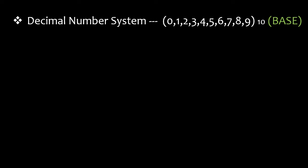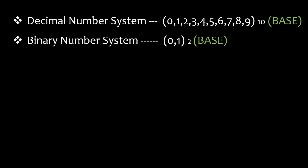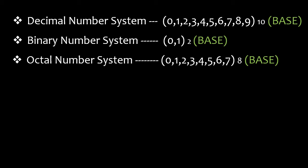The decimal number system starts from 0 and ends at 9, with a total of 10 digits, so its base is 10. The binary number system has only 0 and 1 — 2 digits — so its base is 2. The octal number system starts from 0 and ends at 7, with 8 digits, so its base is 8.